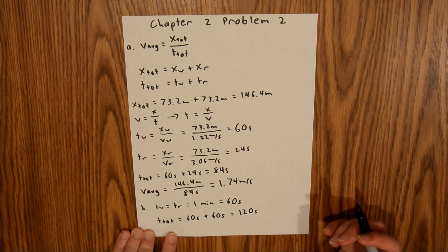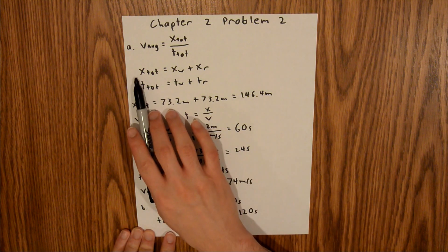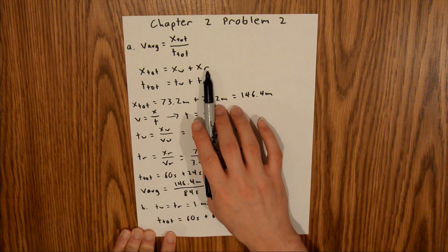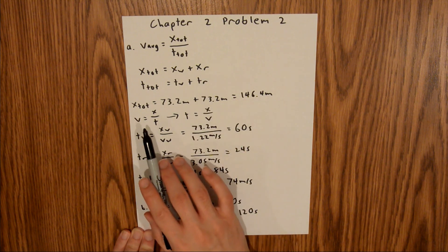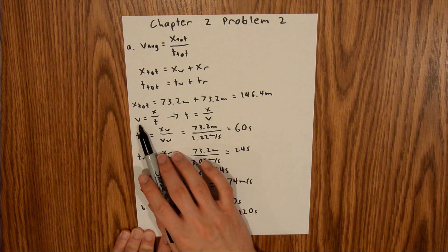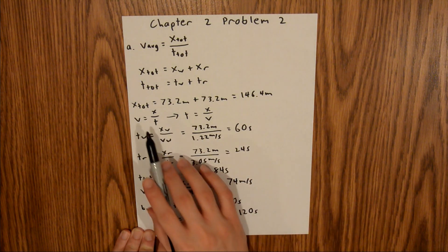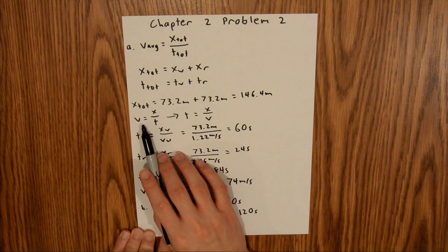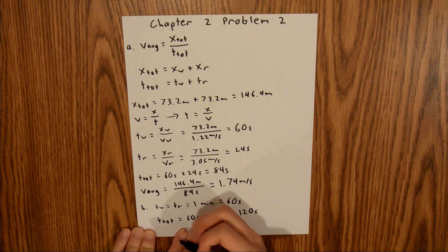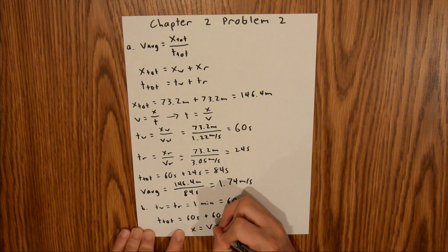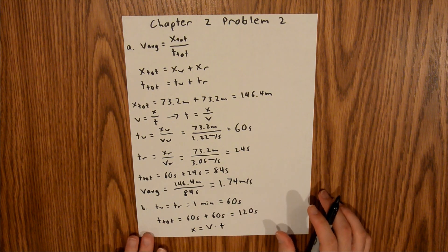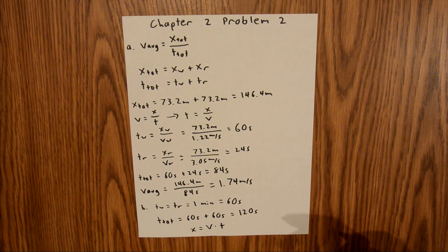Now we need to calculate X-total. The way that we find X-total is using the displacement equation. In order to find the individual displacements, we will rearrange velocity equals displacement over time for x. We multiply both sides by time, and that leaves us with x is equal to velocity times time. I'm out of space on this page, so I'm going to get another piece of paper.